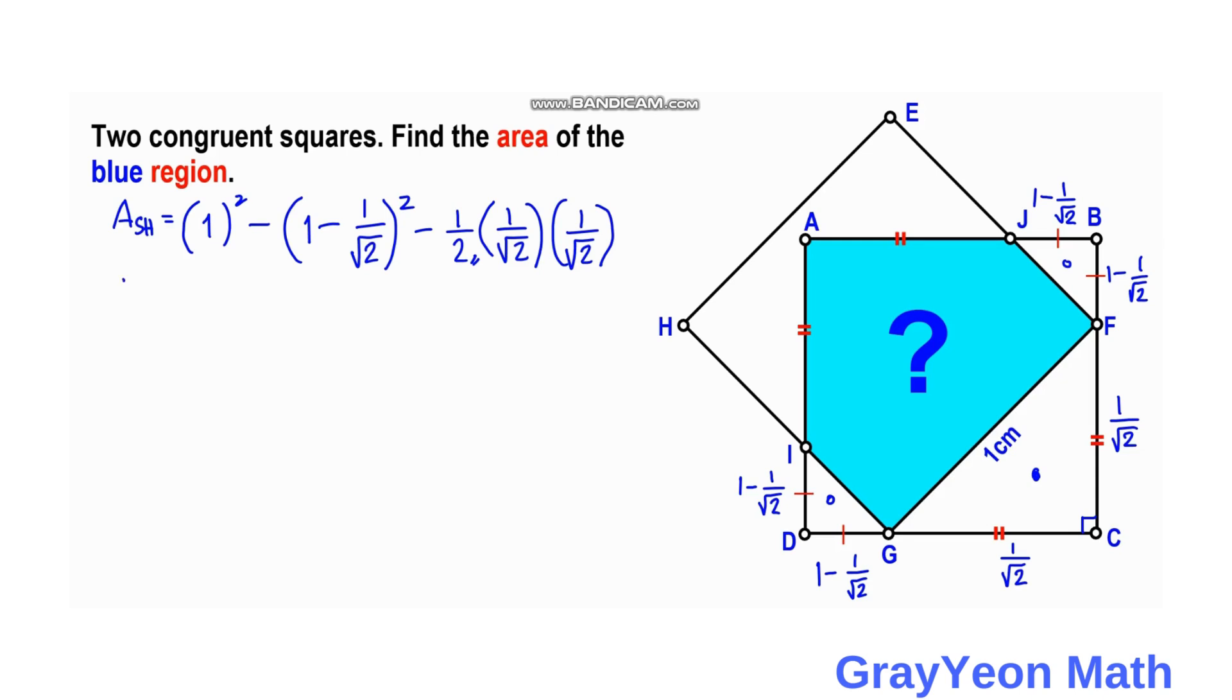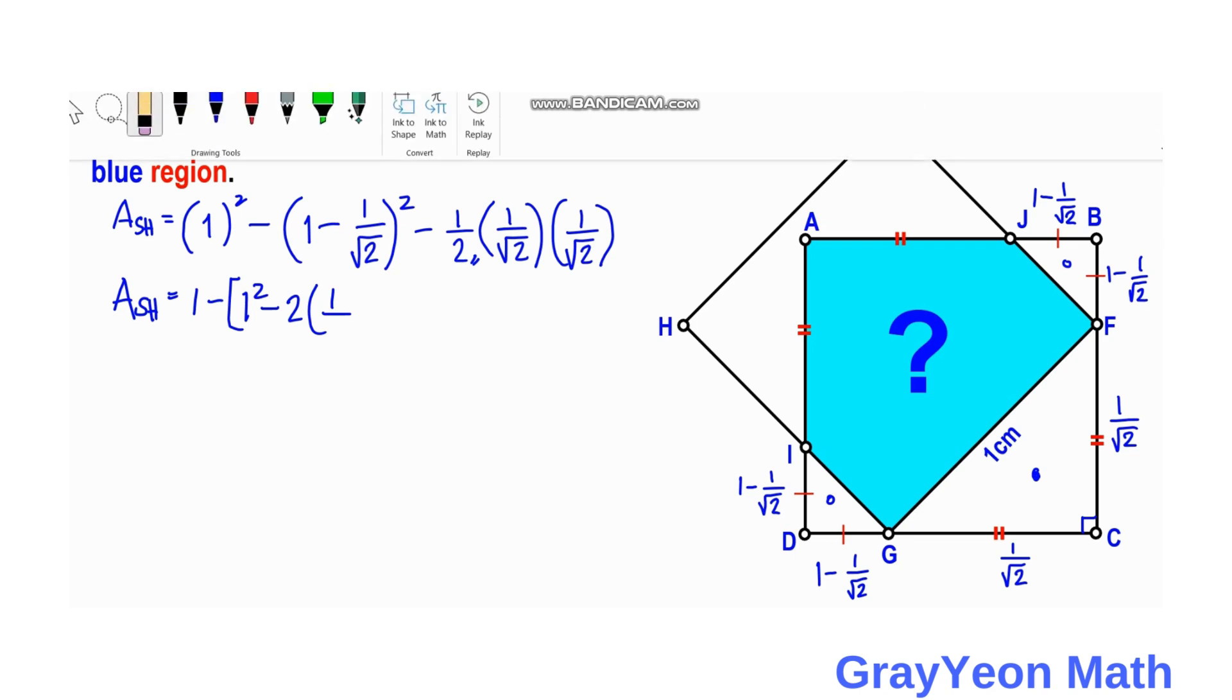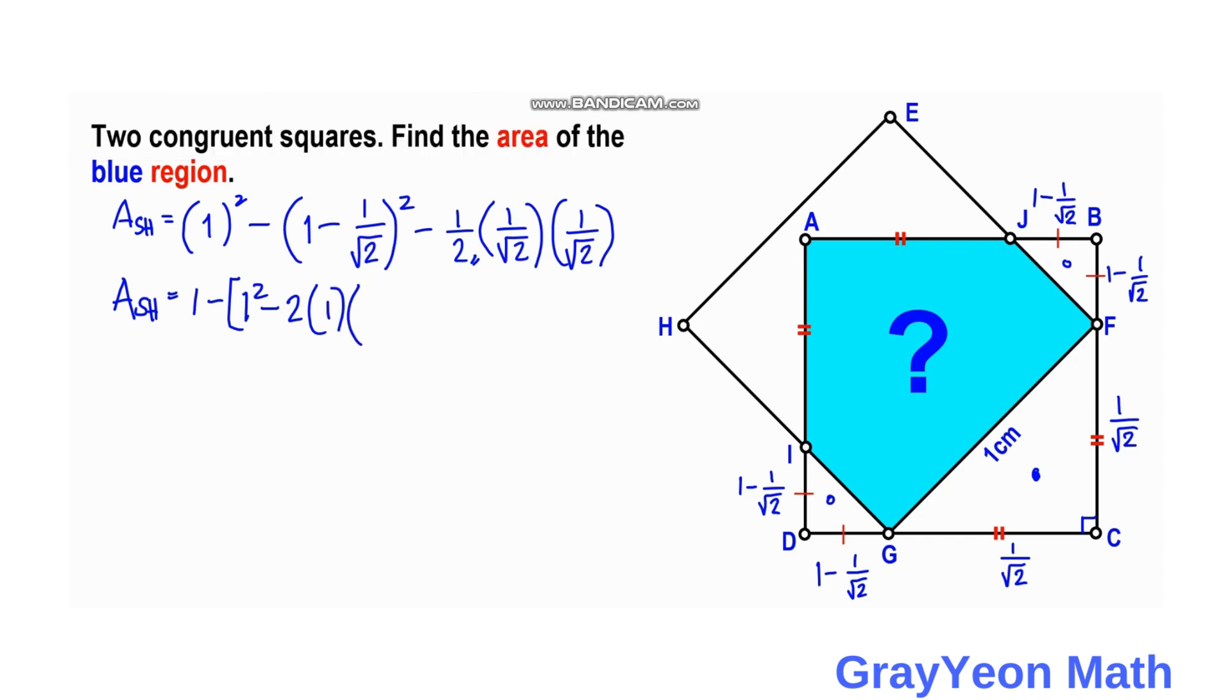So next we write this: 1 square is, that is 1, minus this, so that is 1 square minus 2 times 1. That is 1 only, so 1 times 1 over square root of 2. We are just squaring the binomial, so this becomes plus 1 over square root of 2 squared.